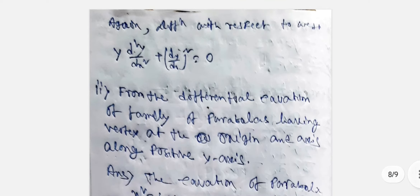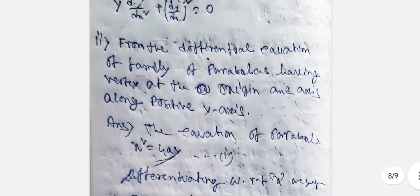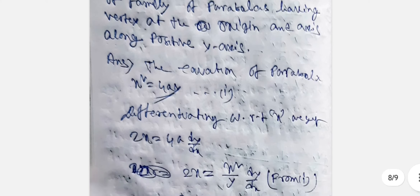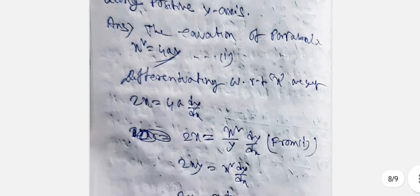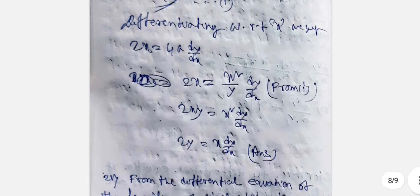Next question: Form the differential equation of the family of parabolas having vertex at the origin and axis along the positive y-axis. The equation is x² = 4ay. Differentiating with respect to x: 2x = 4a·dy/dx, so a = x/(2·dy/dx). Substituting back: x² = 4·[x/(2·dy/dx)]·y, giving 2xy = x²·dy/dx, or 2y = x·dy/dx.